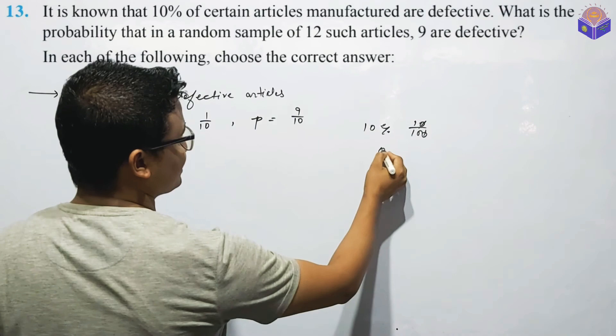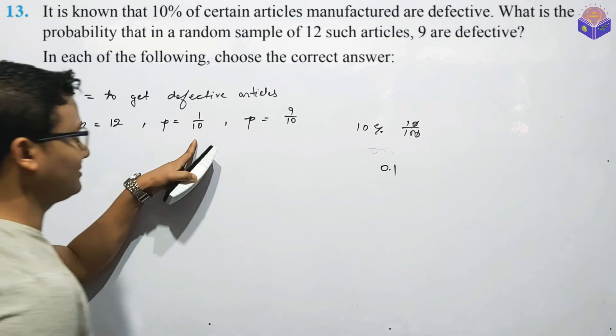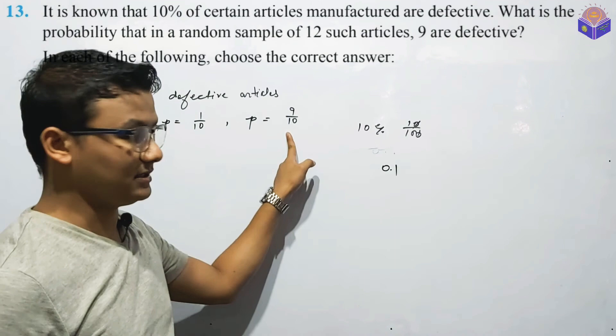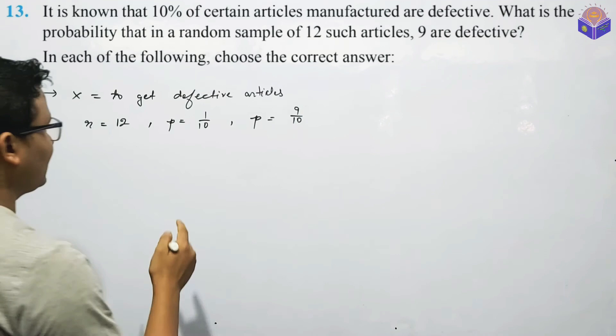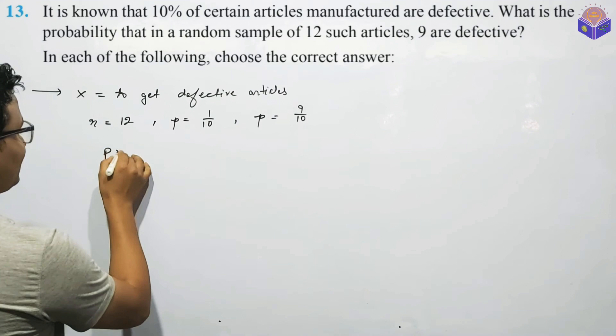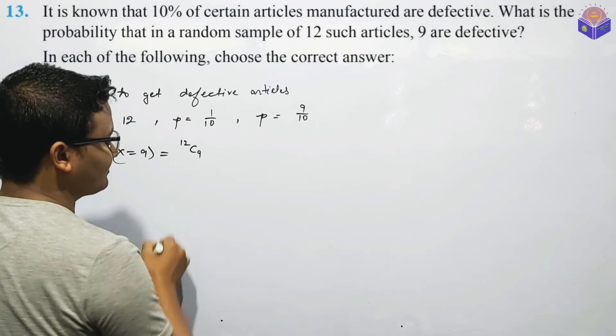If you don't have a statistic, the answer is 0.01. 0.1, 0.1. 0.1 is a thamma, then 0.9 is a thamma — that is the fraction of the thamma. 12 articles, 9 defective. P(X=9): the trial machine is 9 times success. This is 1 by 10 whole to the power of 9, into 9 by 10.